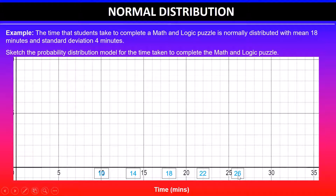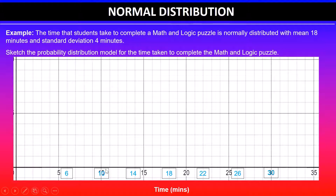And then for the third standard deviation, we've got 26 plus 4 which is 30, and 10 take away 4 which is 6. So the range of values from 6 to 30 will capture approximately 99% of the data — that's within three standard deviations.